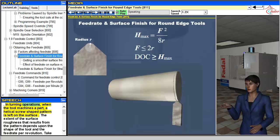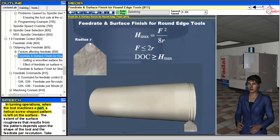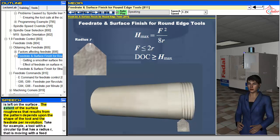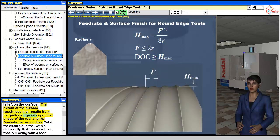In turning operations, when the tool machines a part, a helical screw-shaped pattern is left on the surface. The extent of the surface roughness that results from the pattern depends upon the shape of the tool and the feed rate per revolution.